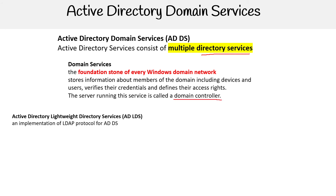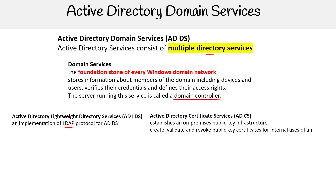Some of the services found within Active Directory include Active Directory Lightweight Directory Service, which is an implementation of the LDAP protocol for Azure Directory Domain Services — we'll definitely talk about LDAP in this course. There's also Active Directory Certificate Services, which establishes an on-premise public key infrastructure to create, validate, and revoke public key certificates for internal use.